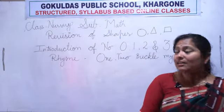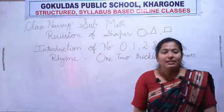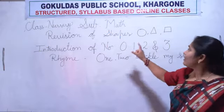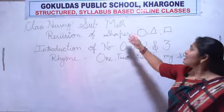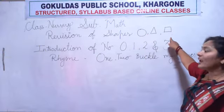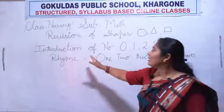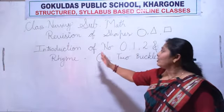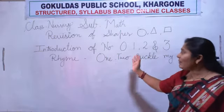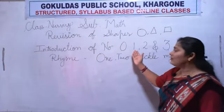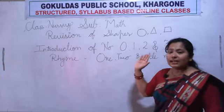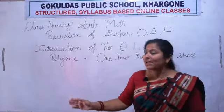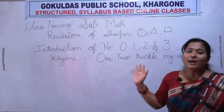Today our subject period — math period. Now we will learn. First we will revise shapes: circle, triangle, and square. Then we will learn a new topic — introduction of numbers: 0, 1, 2, and 3. And we will also learn one rhyme: 1, 2, Buckle My Shoe.